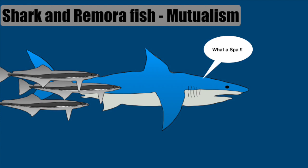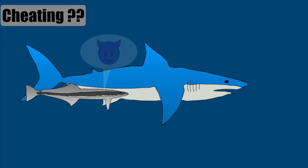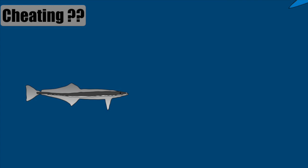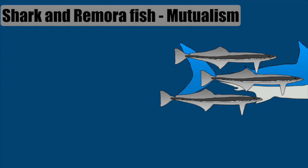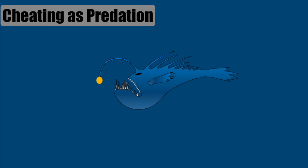In this case also, there are cheaters. Sometimes these cleaner fish also try to eat the skin of the shark, betraying him. If remora fish tries to eat more of shark's skin, the shark shuns away, leaving the remora fish empty stomach. Most of the time, remora fish doesn't cheat and continues this friendship wholeheartedly.